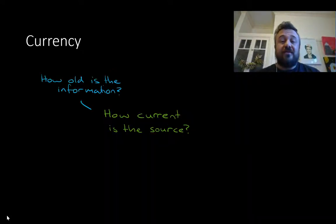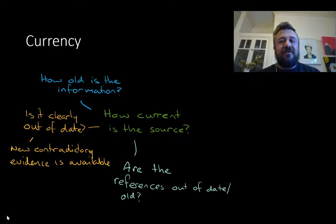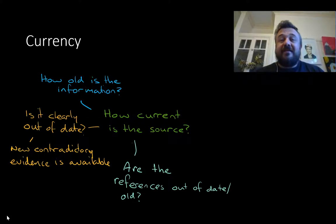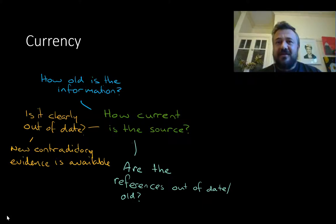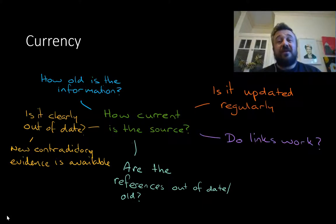Currency — how current is the source? How old is the information? Is it clearly out of date? Can you find more recent stuff which contradicts it? Is new contradictory evidence available? Are the references out of date? For example, I do a lot of reading about education and online learning, and a lot of the arguments I get against what we're arguing for here are sources that were 10 years old. The technology is really different. This doesn't mean their concerns are wrong, but it does mean they're talking about outdated technology. Is it updated regularly? Is it an old GeoCities website from the 90s? And do the links work? Is this a website that's still active? This is important because we use those links to check their work and their ideas.